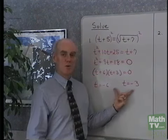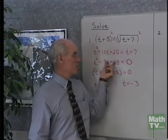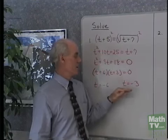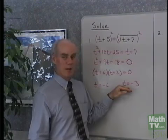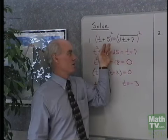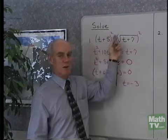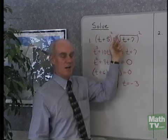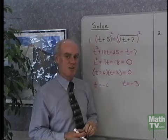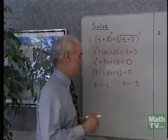Now, I know that these two numbers are solutions to the squared equation, but what I have to be careful of is that they may or may not be solutions to my original equation, because squaring both sides can introduce extraneous solutions. So we need to check both of these solutions.